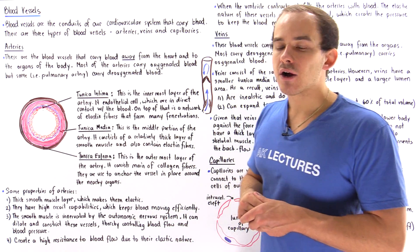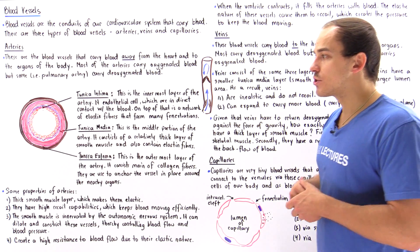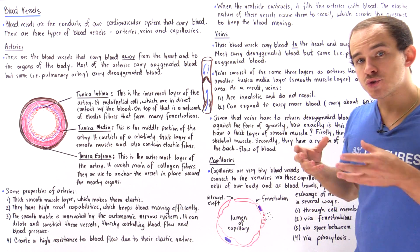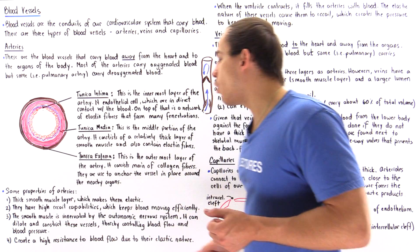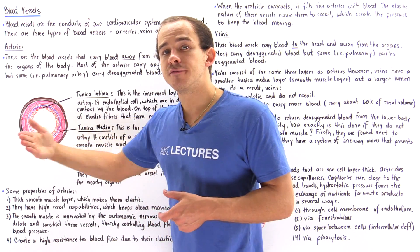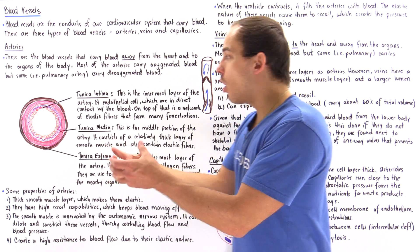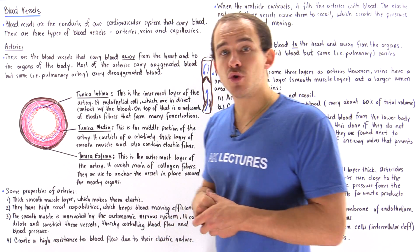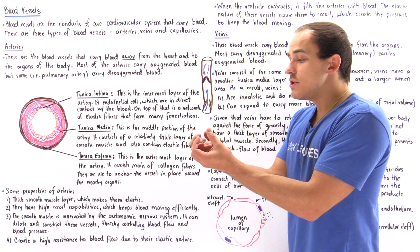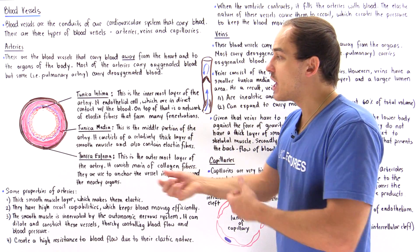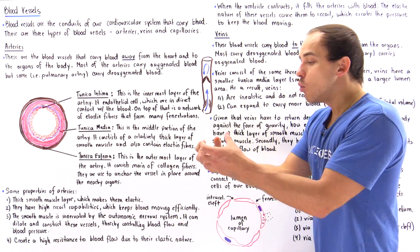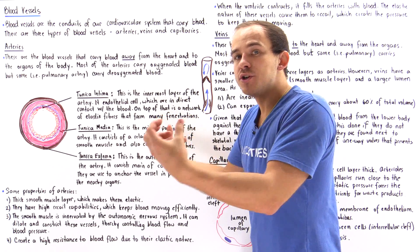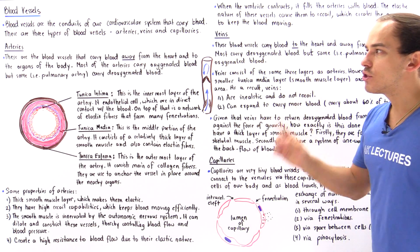As a result of the thick layer of smooth muscle, the artery is not only elastic and stretchy but also has very high recoil capabilities. As blood flows through the artery, it slightly expands. But because of that thick smooth muscle layer — think of it like a rubber band — when you stretch it, it wants to return back to place. So the artery expands but quickly recoils back, and this is exactly how blood flows through our arteries.